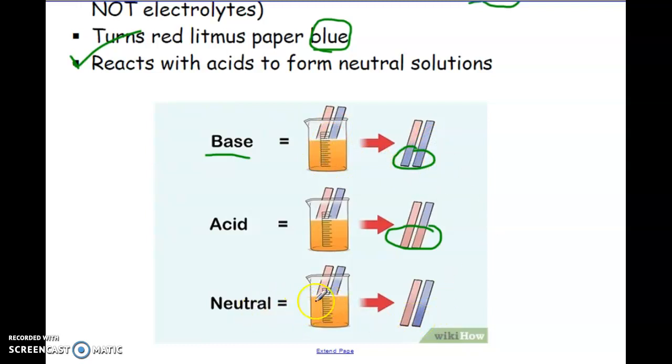Neutral solutions don't change litmus paper at all. Red litmus paper will stay red and blue litmus paper will stay blue. If I used only one type of paper, if I only used blue litmus paper here, I won't know is this neutral or is this a base? Is this an acid or is this neutral? You have to use both so you can see a change.